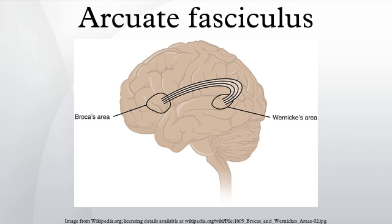A study by Catani, Jones, and Ffytche provided the first anatomical evidence for the presence of two pathways between Wernicke's area and Broca's area. They found one deep pathway, interpreted to directly connect these two regions, and a shallower pathway that consists of two segments. The anterior segment connects frontal cortex with inferior parietal cortex, and the posterior segment connects Wernicke's area with the inferior parietal cortex. Damage to the direct pathway may produce conduction aphasia, whereas damage to the indirect pathway spares the ability to repeat speech but impairs comprehension.